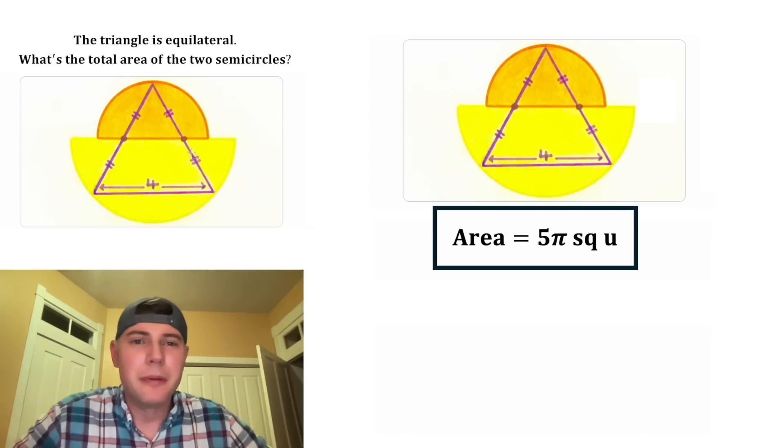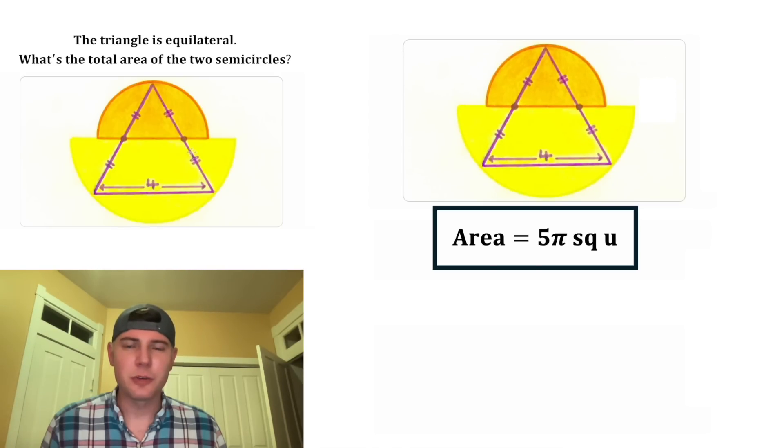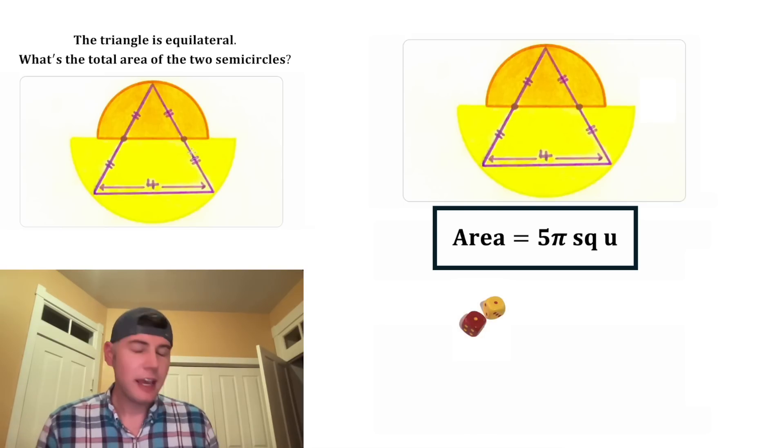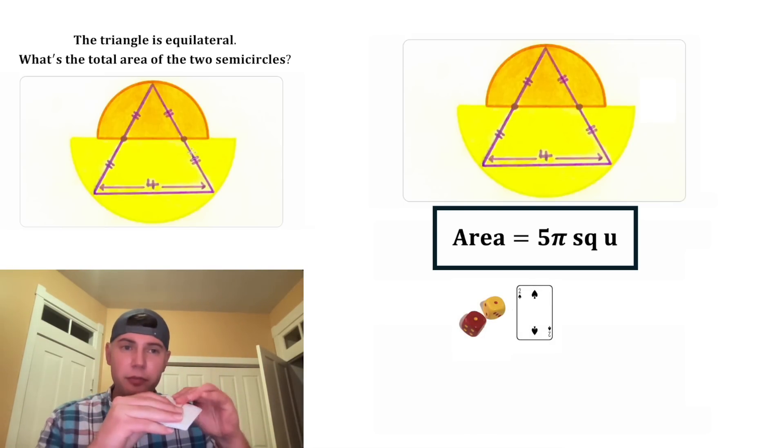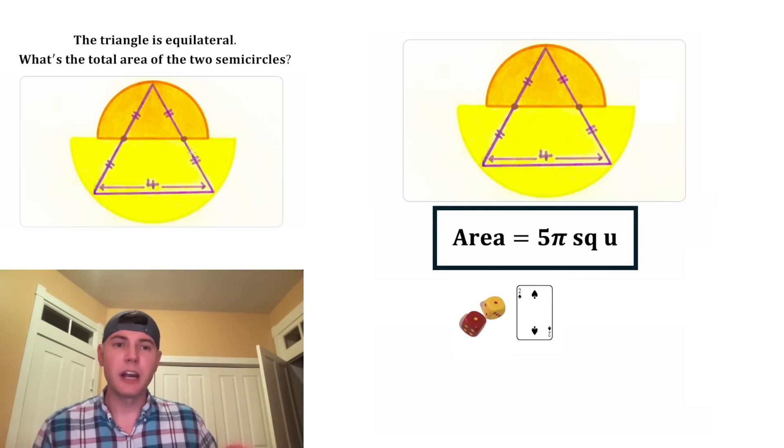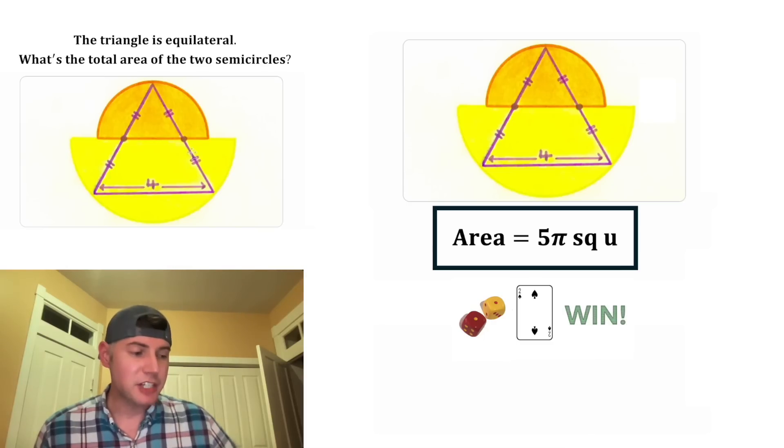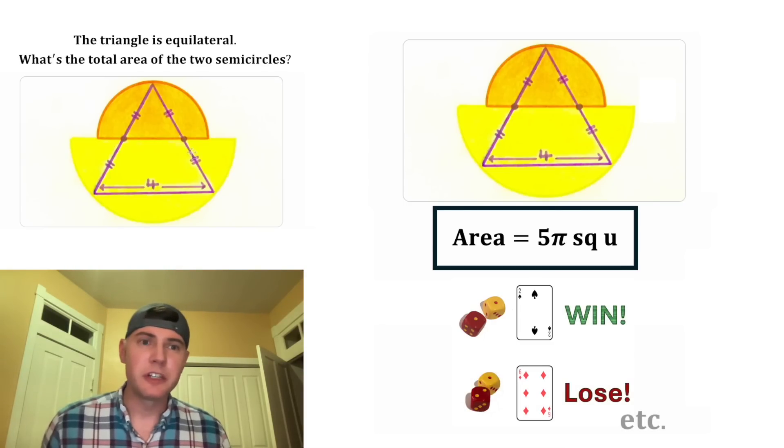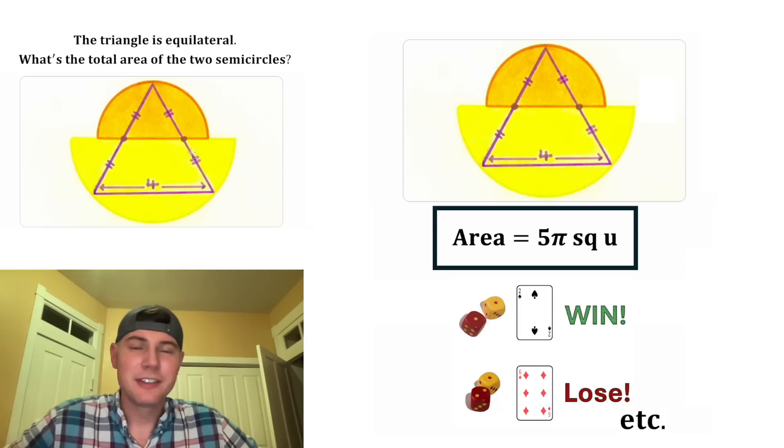For the next video, I want to do a probability question. Someone sent me this question. They asked if you roll two dice and pick a card at random from a deck, what's the probability that whatever you rolled matches the card? A jack would be 11, a queen would be 12, and a king would be 13. I'm going to work on that video next, and I will post it once I solve it. How exciting.